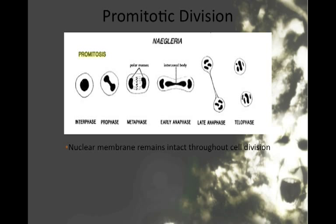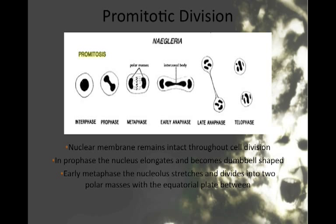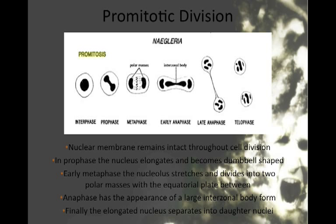The nuclear membrane remains intact throughout cell division. In prophase, the nucleus elongates and becomes dumbbell shaped. In early metaphase, the nucleola stretches and divides into two polar masses with the equatorial plate between them. Anaphase has the appearance of a large interzonal body form. Finally, the elongated nucleus separates into daughter nuclei.